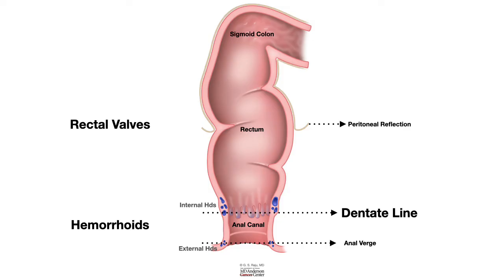There are three rectal valves, otherwise known as the valves of Houston: the inferior rectal valve of Houston, the middle rectal valve of Houston, and the superior rectal valve of Houston. When we describe a lesion, we try to describe the location of the lesion and also its position in relation to these valves.